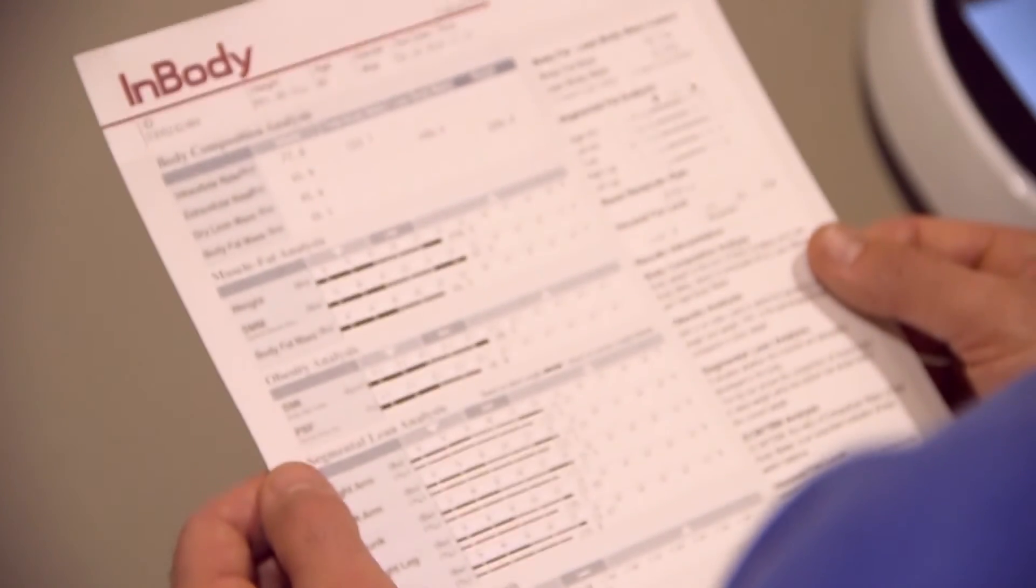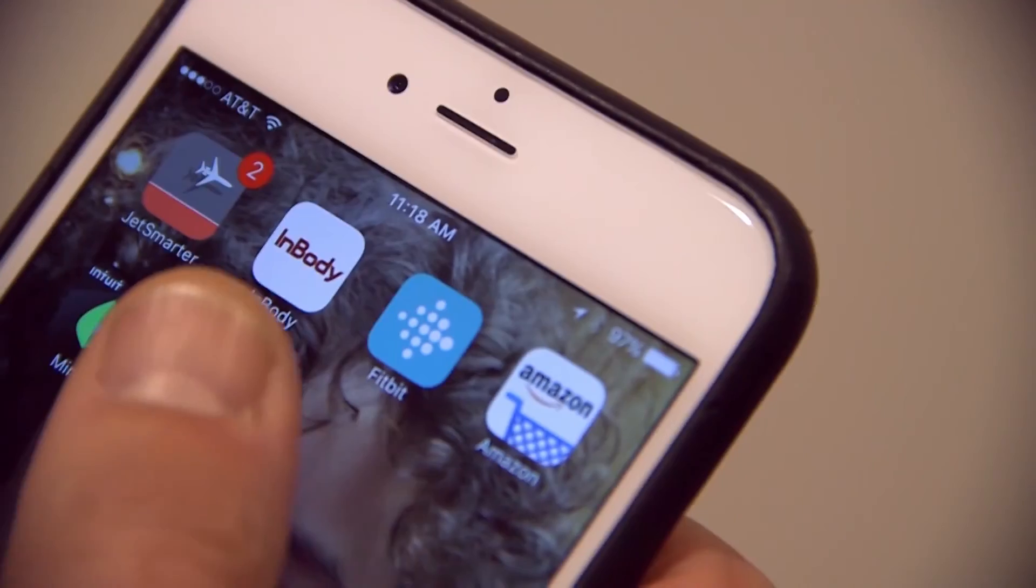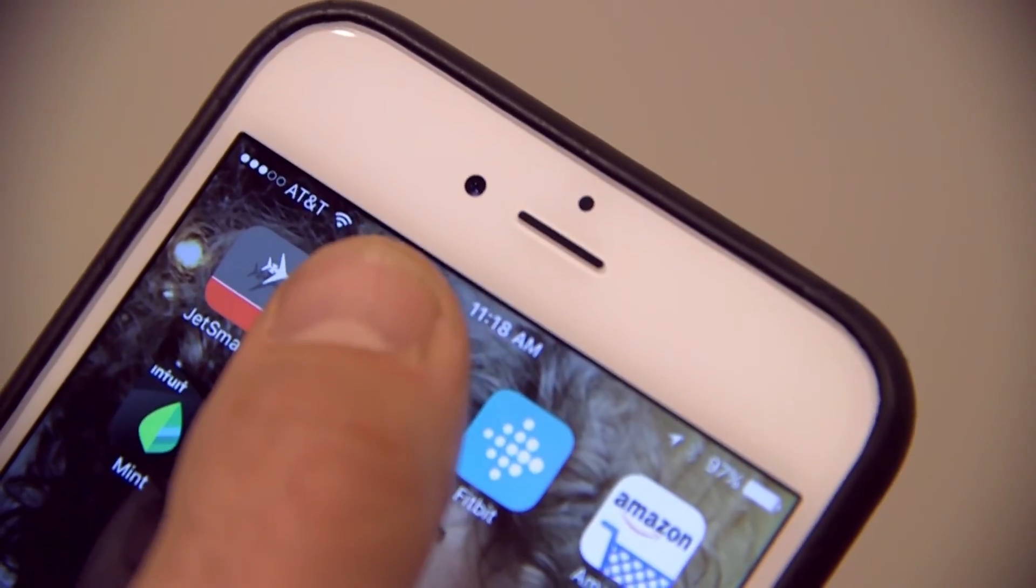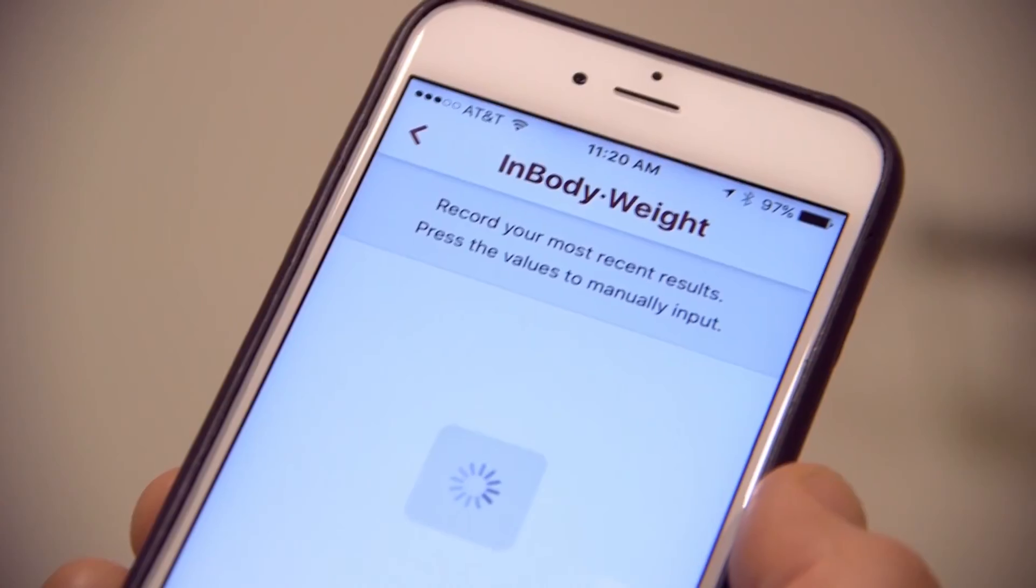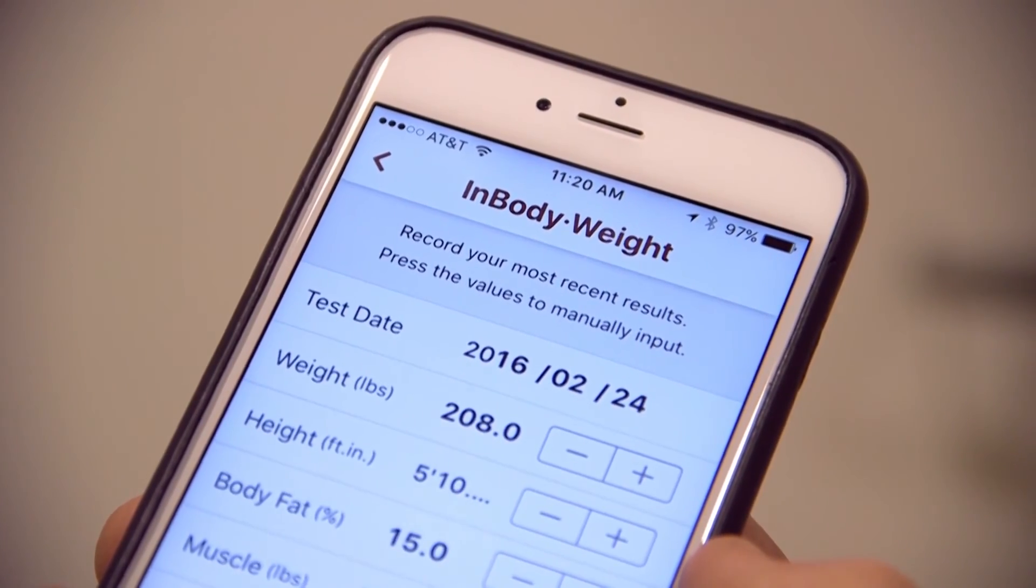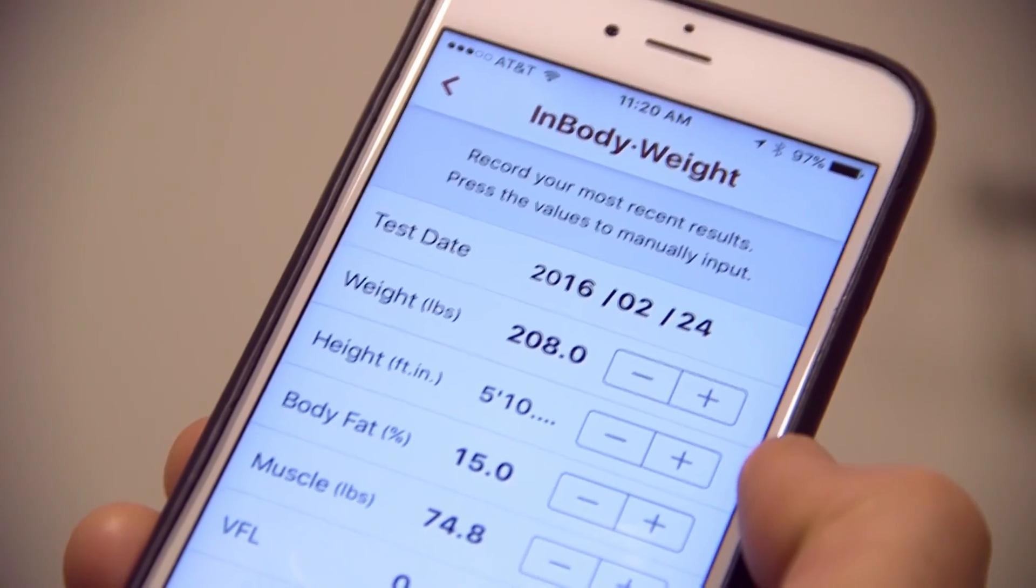Each InBody test will print out a full-page results sheet detailing the muscle, fat, and water values of the athlete. Along with a printout version of your results, you will also be able to track your measurements on your mobile device through the InBody app.